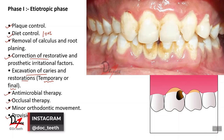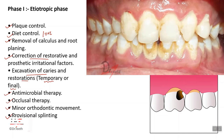Lastly in phase one, you can do provisional splinting. If the patient has come to you with mobile teeth but the teeth do not have a hopeless prognosis and need not be extracted, then in phase one therapy you can do splinting of the teeth, which helps to stabilize them and makes it easier for treatment to be performed.